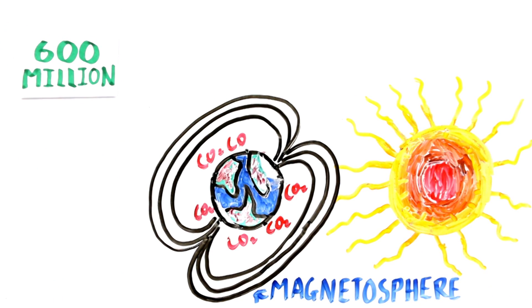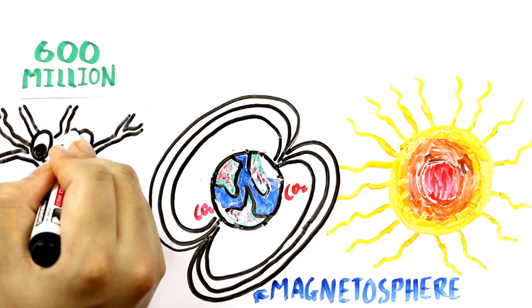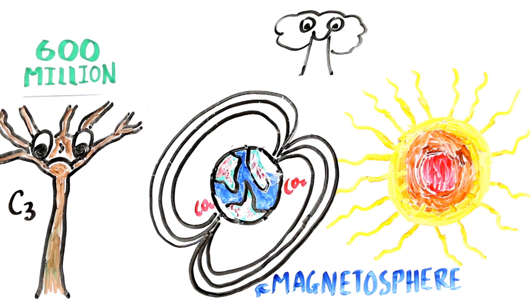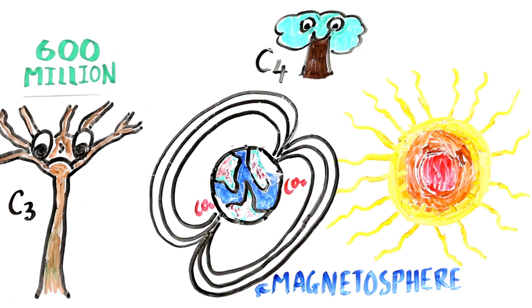In about 600 million years from now, the level of CO2 will fall below the level needed to sustain C3 carbon-fixation photosynthesis used by trees. Some plants use the C4 carbon-fixation method, allowing them to persist at CO2 concentrations as low as 10 parts per million.